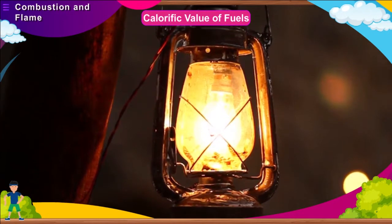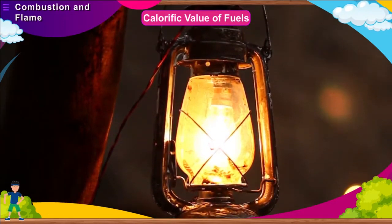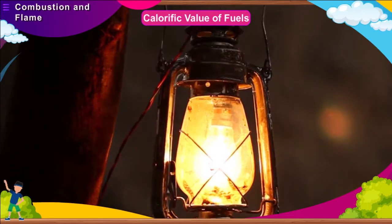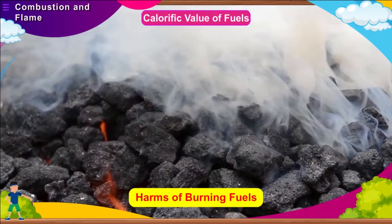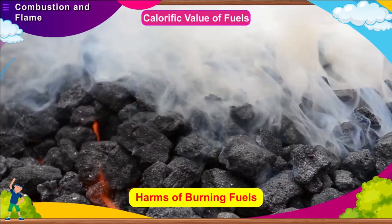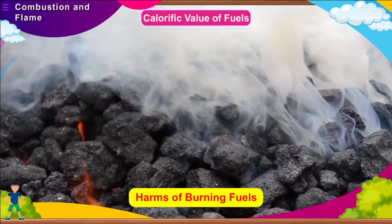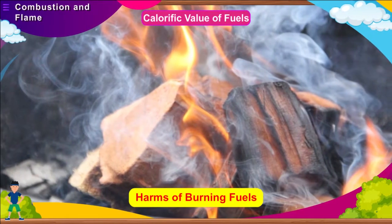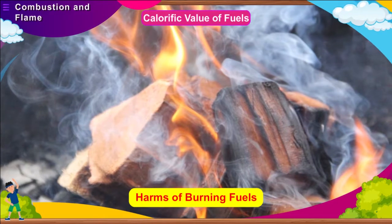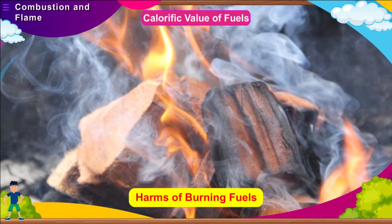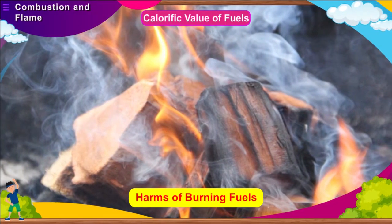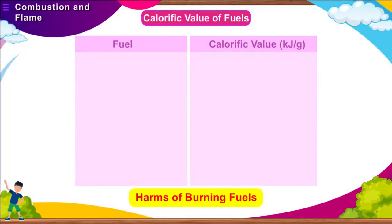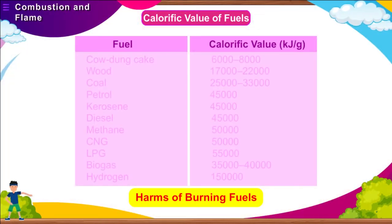Some fuels release unburned carbon particles in the air, which can cause a number of respiratory diseases. Some examples of such fuels are wood, coal, and petroleum. The calorific values (in kilojoules per gram) of common fuels are: cow dung cake 6,000–8,000; wood 17,000–22,000; coal 25,000–33,000; petrol 45,000; kerosene 45,000; diesel 45,000.